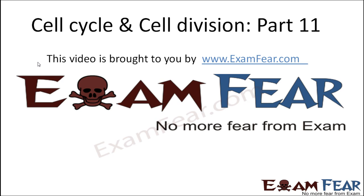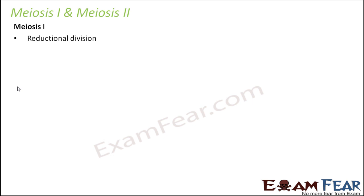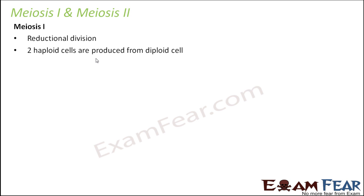Hello friends, this video on cell cycle and cell division part 11 is brought to you by examfear.com. No more fear from exam. Let us quickly brief about meiosis 1 and meiosis 2. When we talk about meiosis 1, it is reductional division. Why? Because two haploid cells are formed from a diploid cell, so the ploidy of the cell gets reduced from diploid to haploid. That is why it is called reductional division.